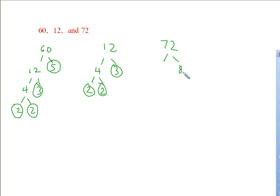So 72: 8 and 9, 3 times 3 is 9, 2 times 4.